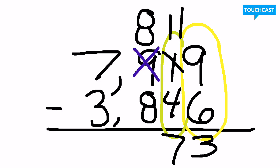Finally, when we go to our next step of the hundreds place, 8 minus 8 is going to give you 0.